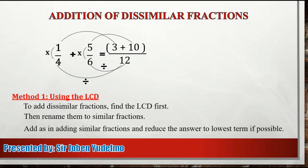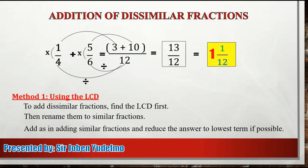Next step, add as in adding similar fractions and reduce the answer to the lowest term if possible. So since similar fractions na sila, pwede na natin silang i-simplify. So 3 plus 10, that is equal to 13. And then, copy their common denominator, which is 12. Since ang ating numerator ay mas malaki pa kaysa sa ating denominator, kailangan natin silang i-simplify. So 13 divided by 12, we will get 1 and a remainder of 1. So our final answer is 1 and 1 over 12.